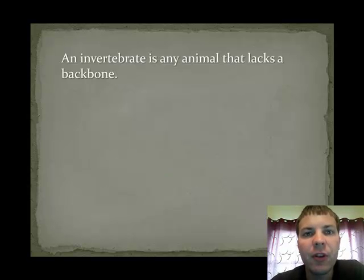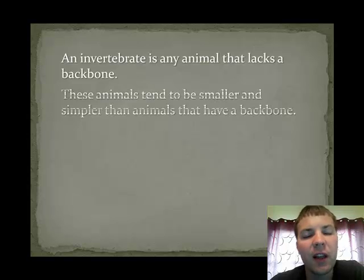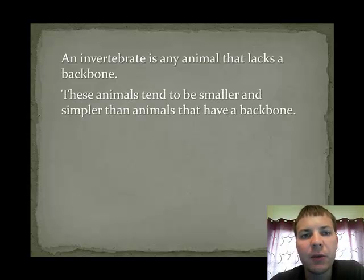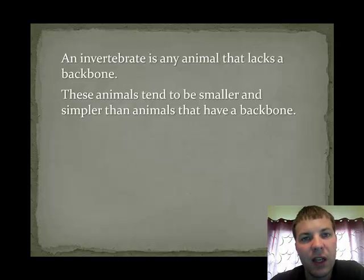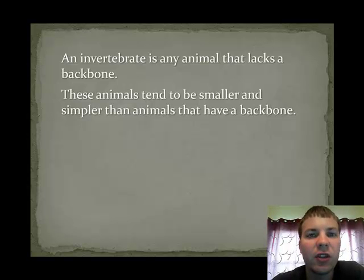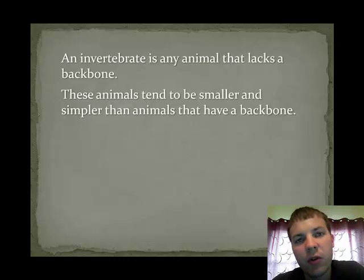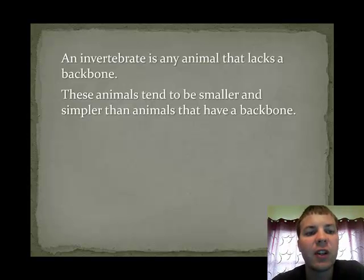The common feature of all invertebrates is that they lack a backbone. These animals tend to be very small. They do not have an internal skeleton. Some of them, such as the insects, do have an external skeleton that we refer to as an exoskeleton.